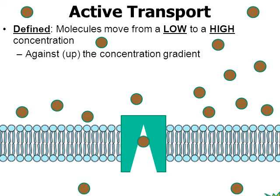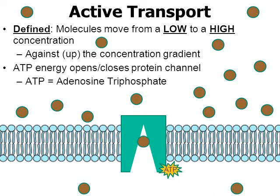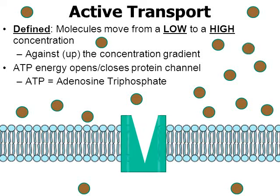A molecule of ATP, adenosine triphosphate, is going to reconfigure and reshape that protein channel. With the release of energy, the protein channel will change shape. That will allow the brown circle to pass to the other side of the cell membrane. Notice how the protein channel then went back to its original shape. This process would then repeat with another input of ATP.